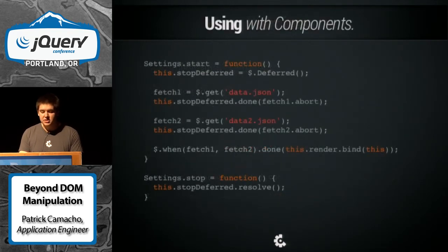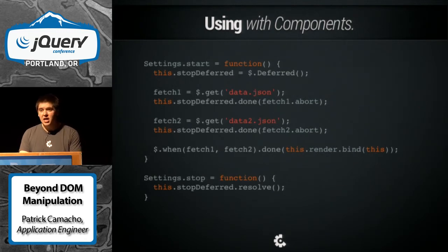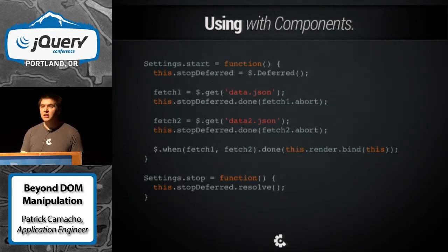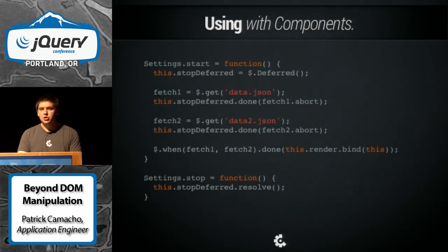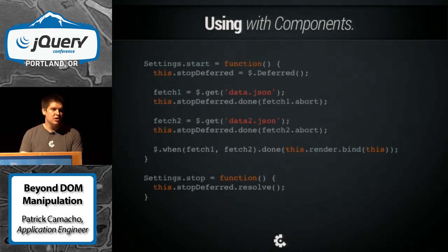So how does this tie into using it with components? When our settings module would start up, we made a promise that we would stop. Every time we wanted to perform specific functionality that we needed to tear down on stop, we could register those callback methods with that promise. We have these two same fetches going on, and when they're both complete, we're going to render some logic onto the DOM. And when we stop the settings, we make sure that anything listening to the stop event to be resolved will be executed. This allows us to manage all these types of asynchronous behaviors.